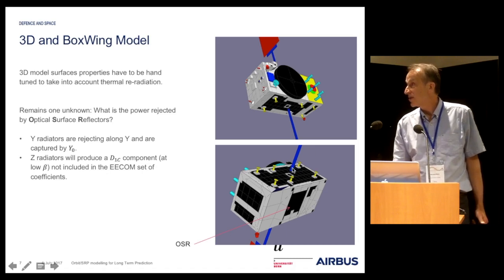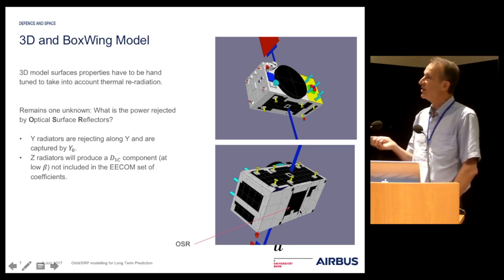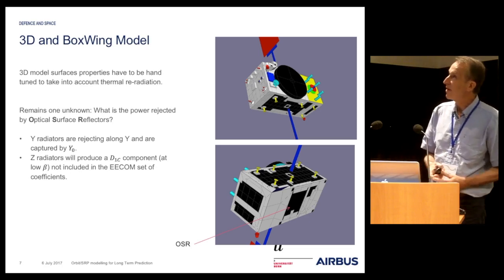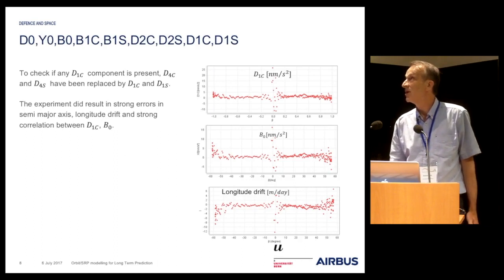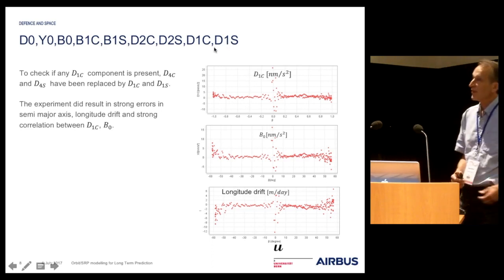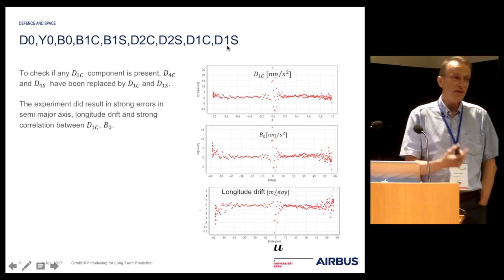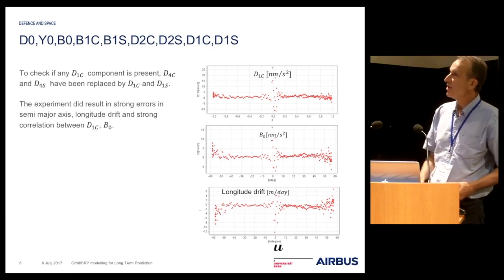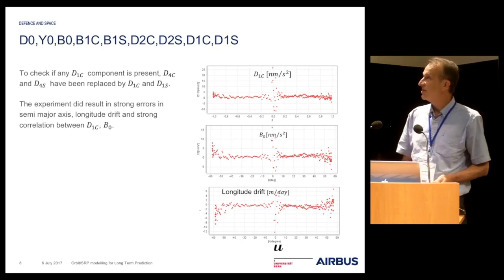We don't know the characteristics of the OSR on the minus Z-face. So in order to find out what the difference could be between the radiation of the minus Z-face and the plus Z-face, we tried a new set of parameters by replacing the D4C and D4S coefficients with D1C and D1S. Because if there is a mismatch between the plus Z-face and minus Z-face, it would lead to a D1C component. The experiment resulted in a strong error in semi-major axis and longitude drift and a strong correlation between some coefficients.